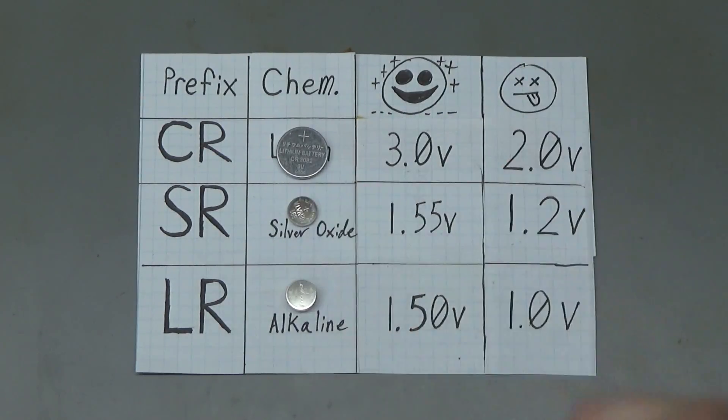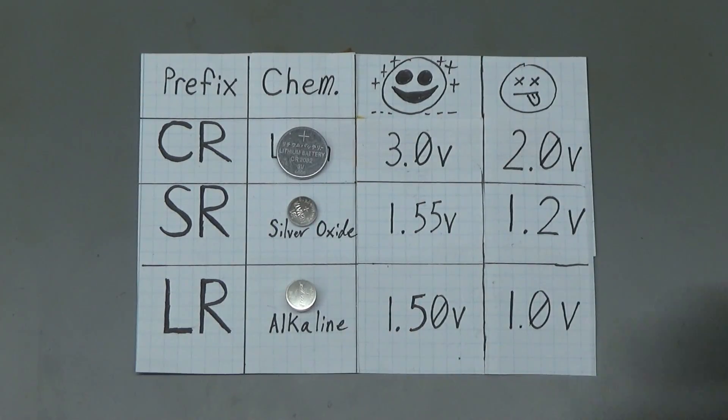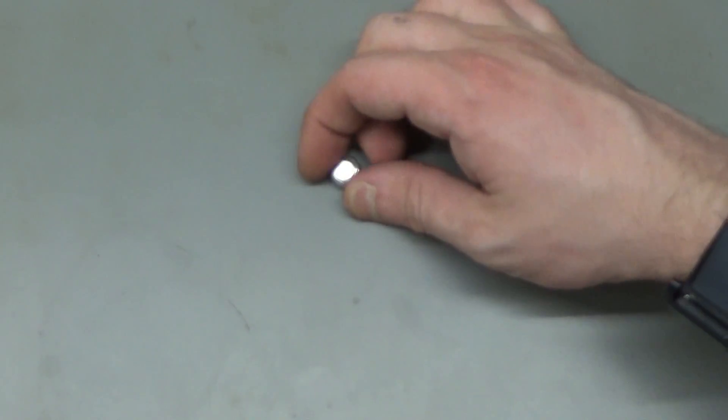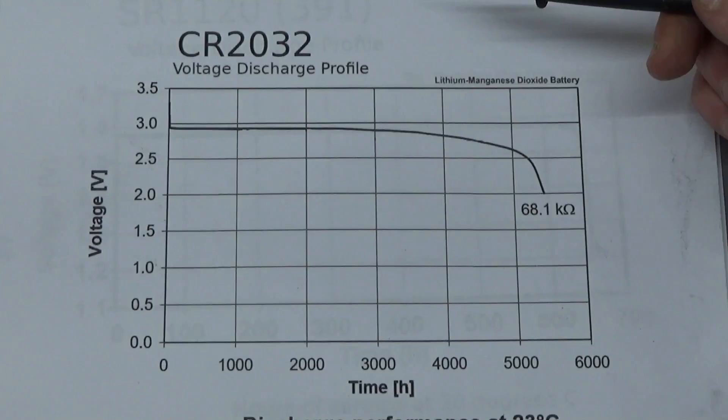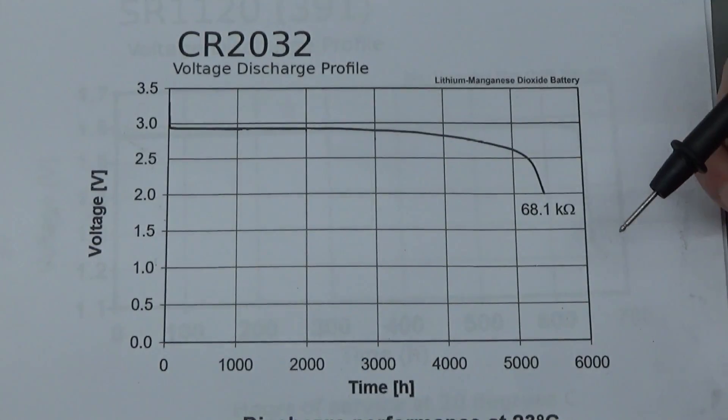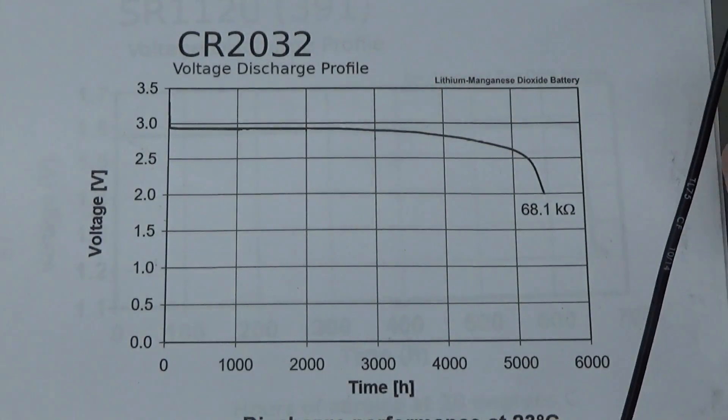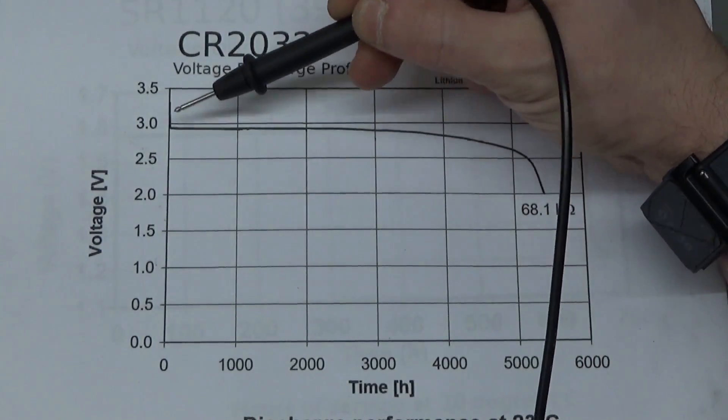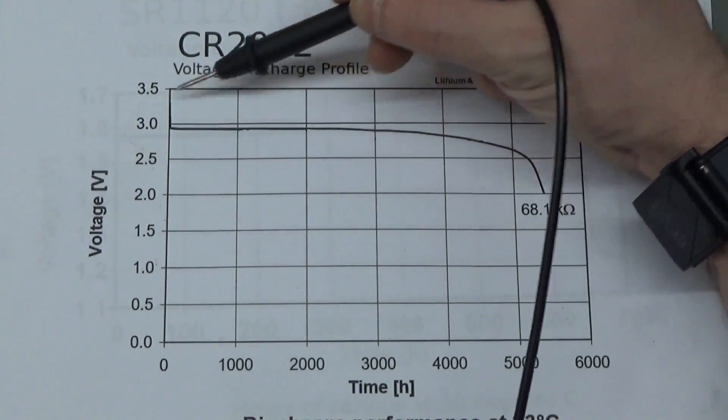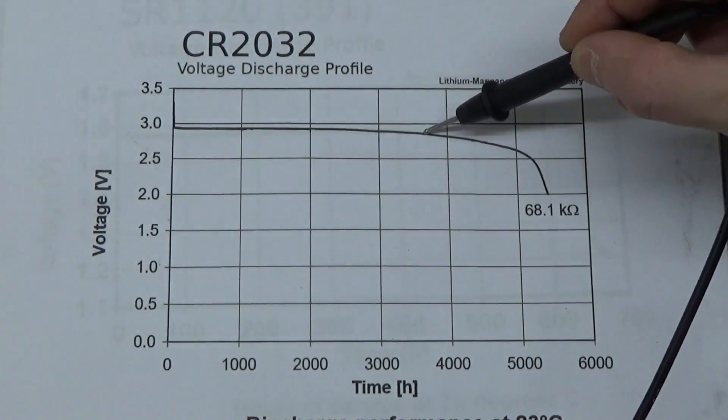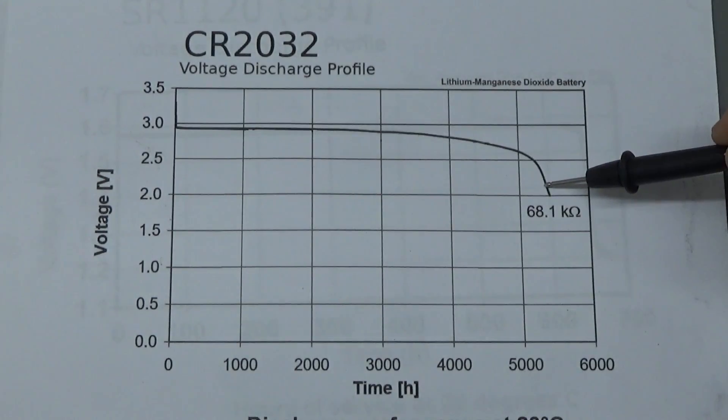So those are the three classifications of batteries. This is the lithium battery. As you can see, it has a nominal voltage right around 3 volts, and that carries on for the majority of its life and then drops off pretty steeply at around 2.5 volts.